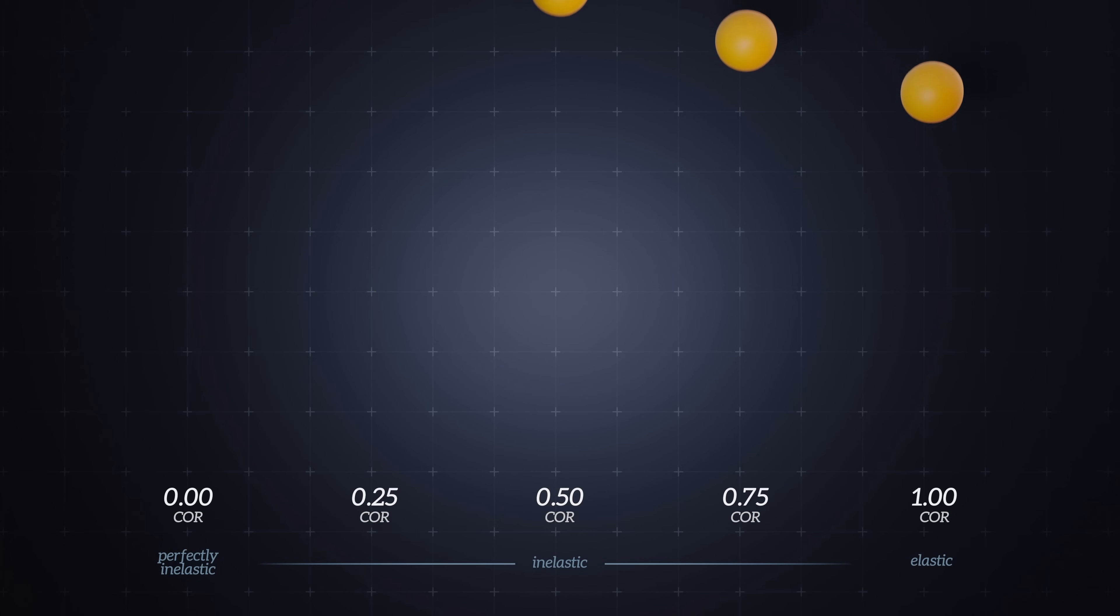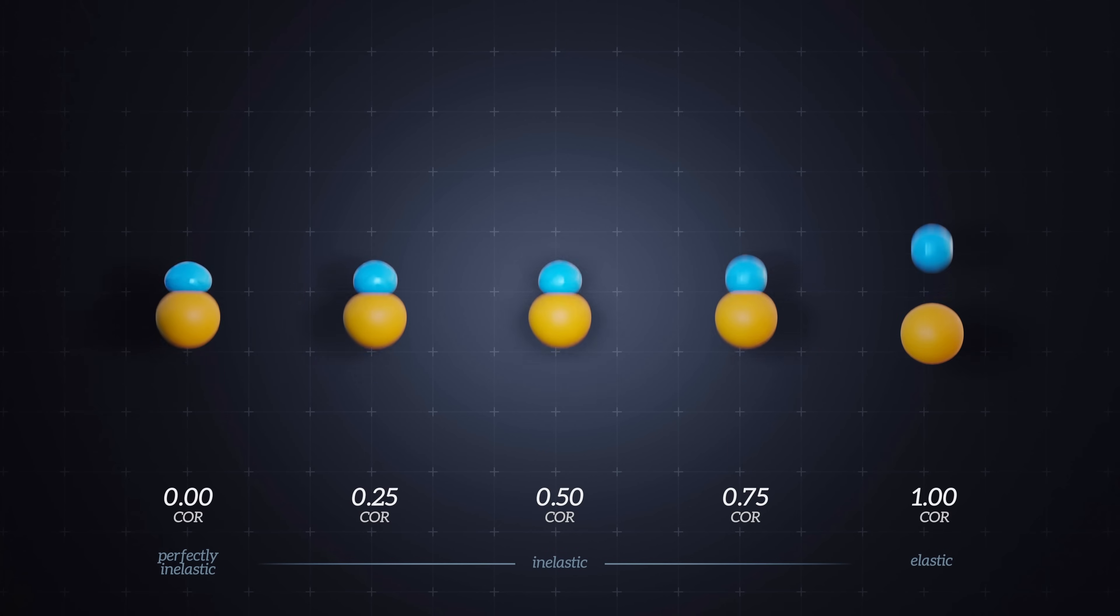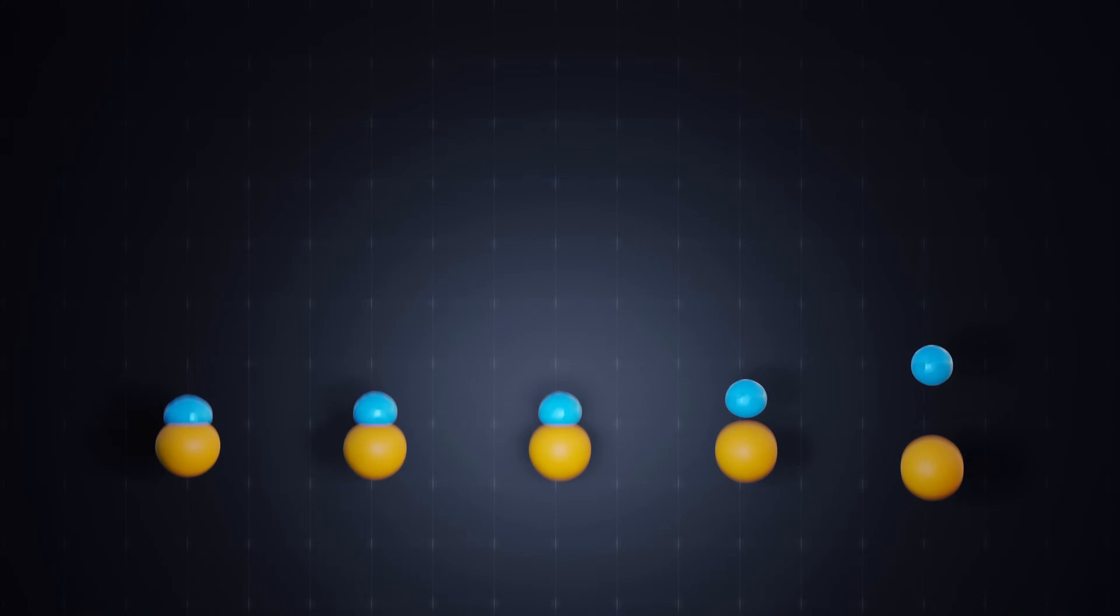To see how the coefficient of restitution is used in an analysis, let's look at the collision of two bowling balls on a smooth, essentially frictionless surface.